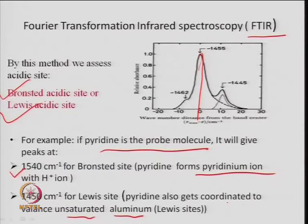Lewis site is because of Al-negative. Pyridine coordinates with that Al-negative and gives Lewis acidity. The concentration of Lewis acid can be related to the millimoles of pyridine adsorbed on the catalyst. By this information one can determine different kinds of acidity present in a zeolite material.